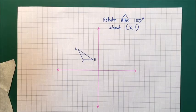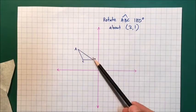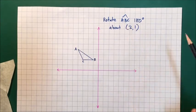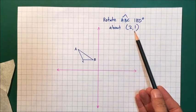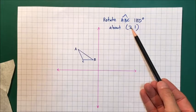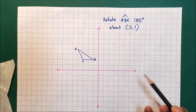What we want to do here is rotate this triangle ABC 180 degrees about 2 comma 1. So this is a coordinate. First of all, let's find 2 comma 1, which is here: 1, 2, 1. So this here is going to be the center of rotation.